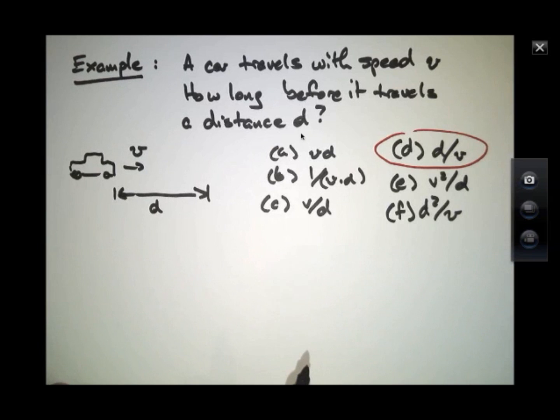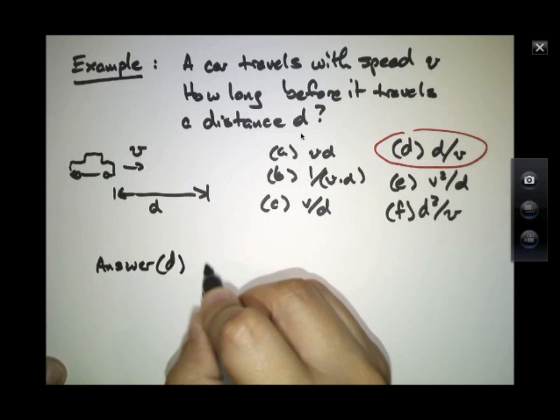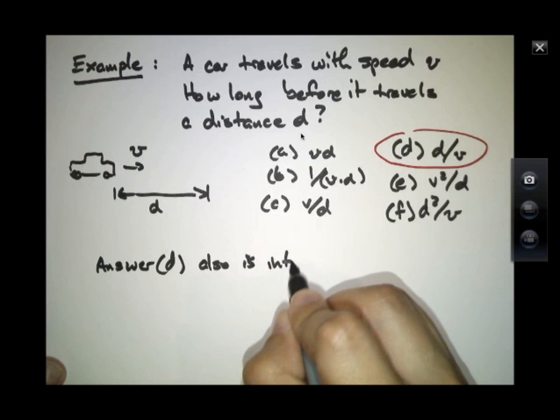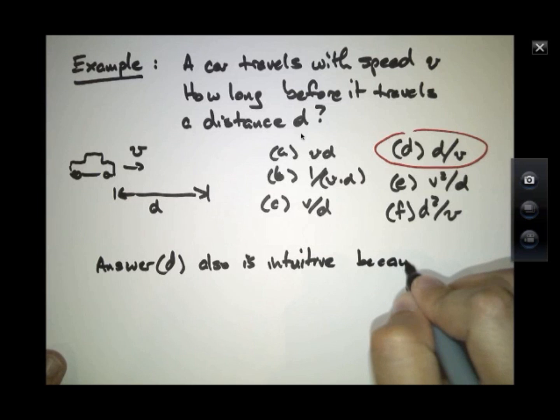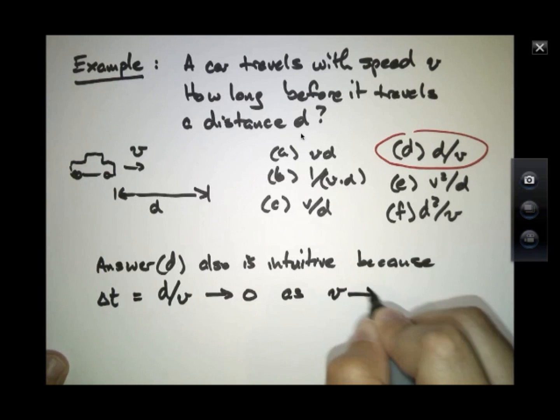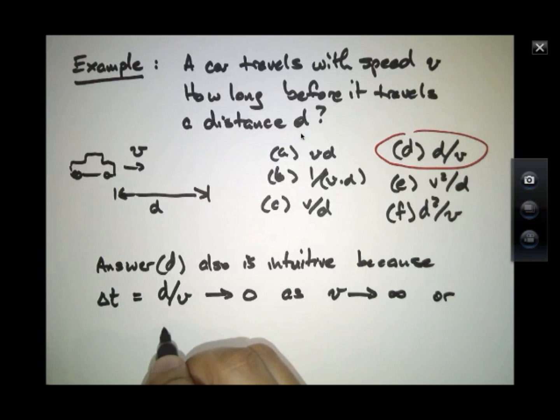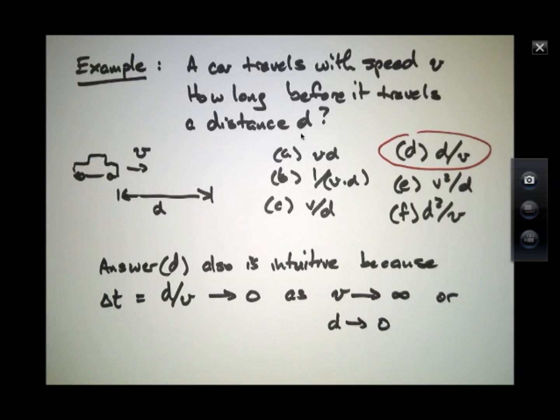And I will point out that, actually, this particular answer d has a particularly intuitive sense to it. Because if you look at what is this delta time, this time interval, it intuitively should take less time for the car to cover a certain distance if the speed is quite larger. So that's a very simple thing. We know that we can get to Dallas more quickly if we're traveling at 100 miles an hour, then 60 miles an hour.